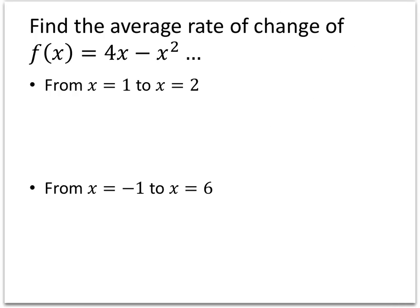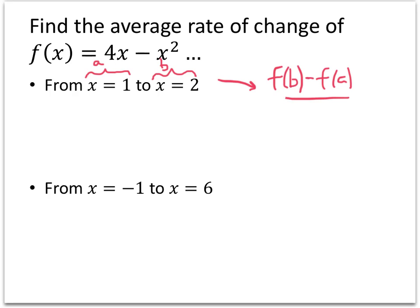Let's do some examples. Let's find the average rate of change of f(x) = 4x minus x squared. First, let's do it from x equals 1 to x equals 2. I'm going to call x equals 1 my a, and x equals 2 my b. So the first thing I need to do to compute my average rate of change — which is f(b) minus f(a) divided by b minus a — is figure out what f(b) and f(a) are.